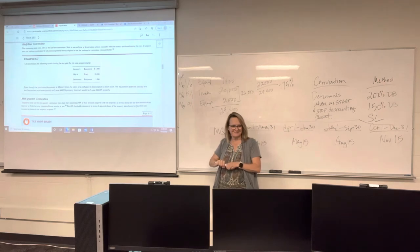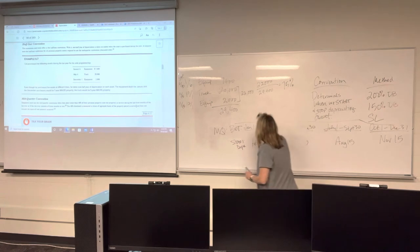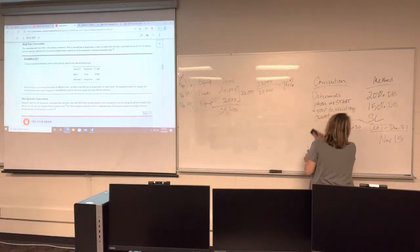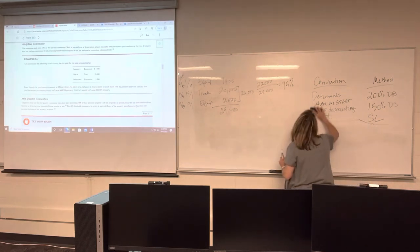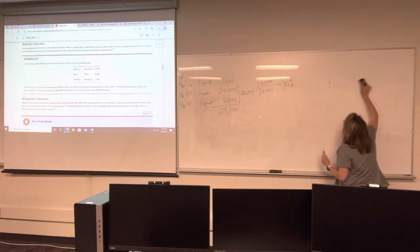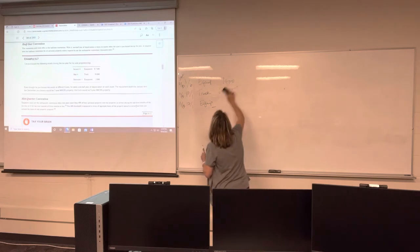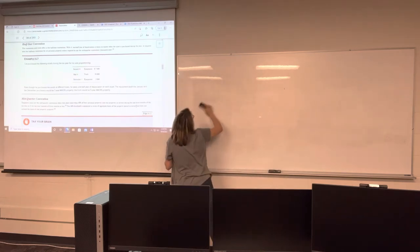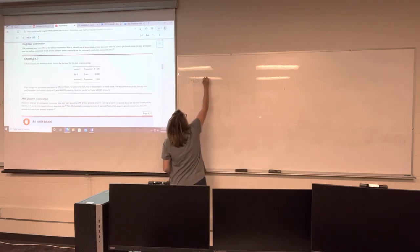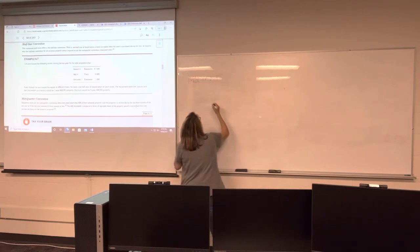Here's a decision flowchart: Step 1 — total all personal property placed in service in the current year. Step 2 — total all personal property placed in service in the last quarter of the year. Step 3 — divide number two by number one. Step 4 — if the result is equal to or less than 40%, use the half-year convention; if it's more than 40%, use the mid-quarter convention.